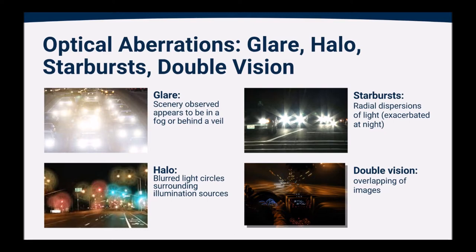So what does that mean for the vision that you see as an individual with keratoconus? Well, that means that we experience more glare, more starbursts, more halos around lights, more double vision or overlapping of those images, and all of these symptoms are typically worse in darker situations where your pupil is larger and allows more light into the eye. The more light coming in, the more light that's scattered, the more issues that we have.